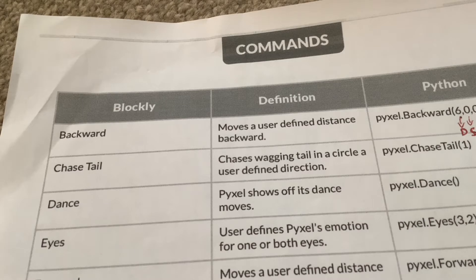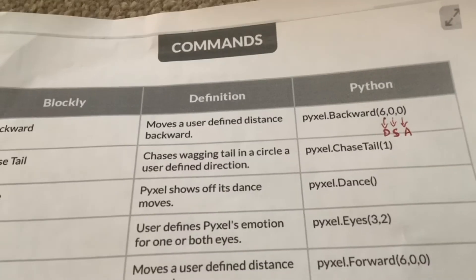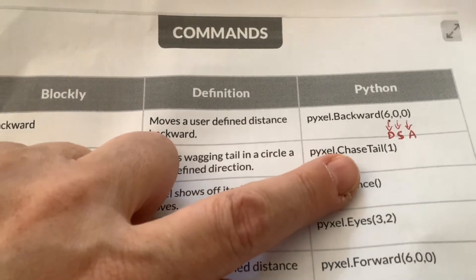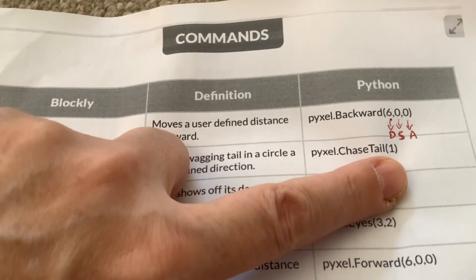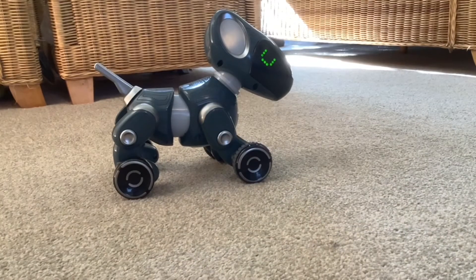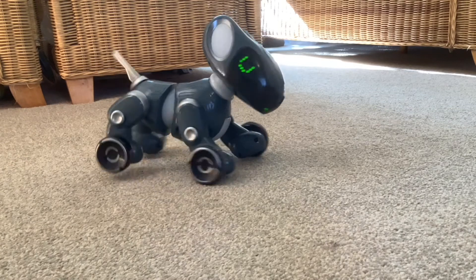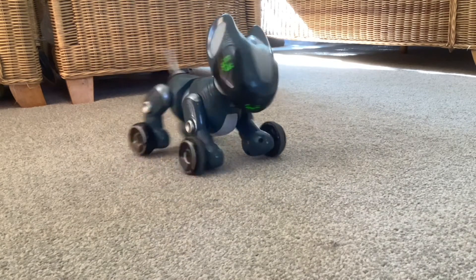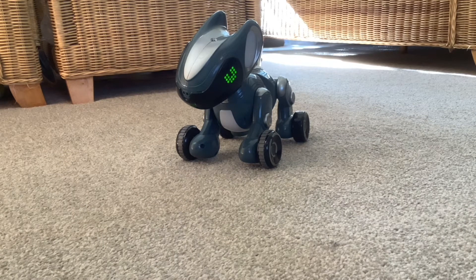The next command is chase tail — Pixel chases its tail in a circle in a user-defined direction. The Python code is 'pixel.chase_tail' with a one in brackets, so that one will either mean right or left. If we execute the code we'll find out which way he goes. I'm pressing two on the Code Activator now. He's going clockwise — so clockwise is to his left. Basically if you put one it goes clockwise.